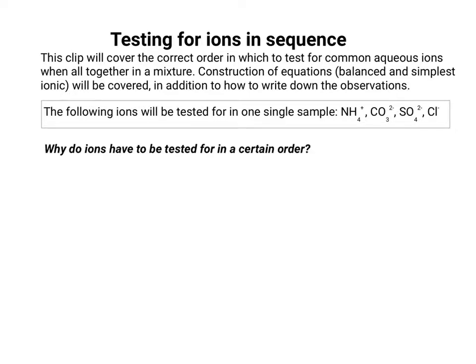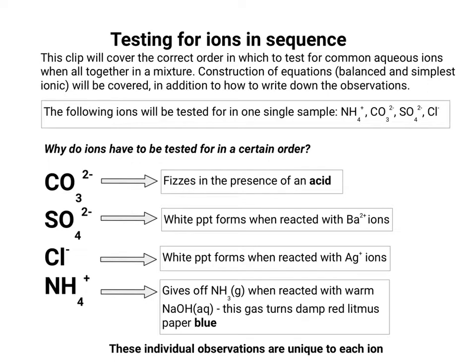The first thing to consider is why we have to think about testing for ions in a certain order. I've now listed them in the correct order in which they need to be tested for, and I'll quickly explain why. We need to make sure we're doing it in order so that one particular observation doesn't mask another.